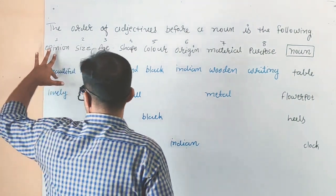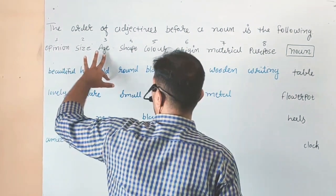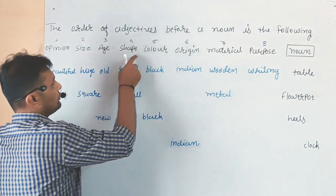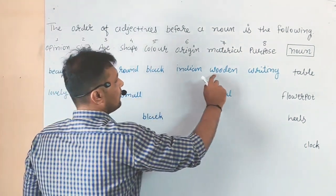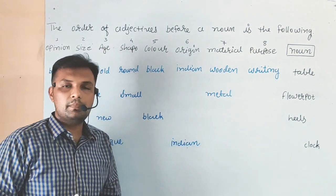Beautiful is Opinion, Huge is Size, Old is Age, Round is Shape, Black is Color, Indian is Origin, Wooden is Material, and Writing is our Purpose.